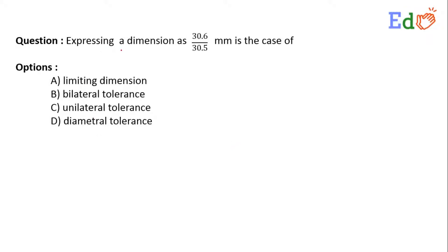Consider this question: expressing a dimension as 30.6 by 30.5 millimeter is the case of — options are given: a) limiting dimension, b) bilateral tolerance, c) unilateral tolerance, and d) diametral tolerance.